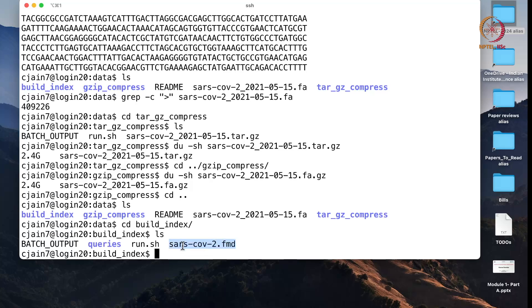So, I have already before this demo, I have already computed this index. This file SARS-CoV-2.fmd represents that index file. And if you look at the index file, it is only 33 megabytes.